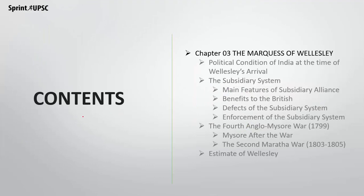So first of all, we are going to discuss the contents of this chapter. What are the things in this chapter? First, what were the political conditions when Wellesley was here in India? Then we will discuss the Subsidiary Alliance System — what the entire system is, its features, benefits to the British, and defects of the system.